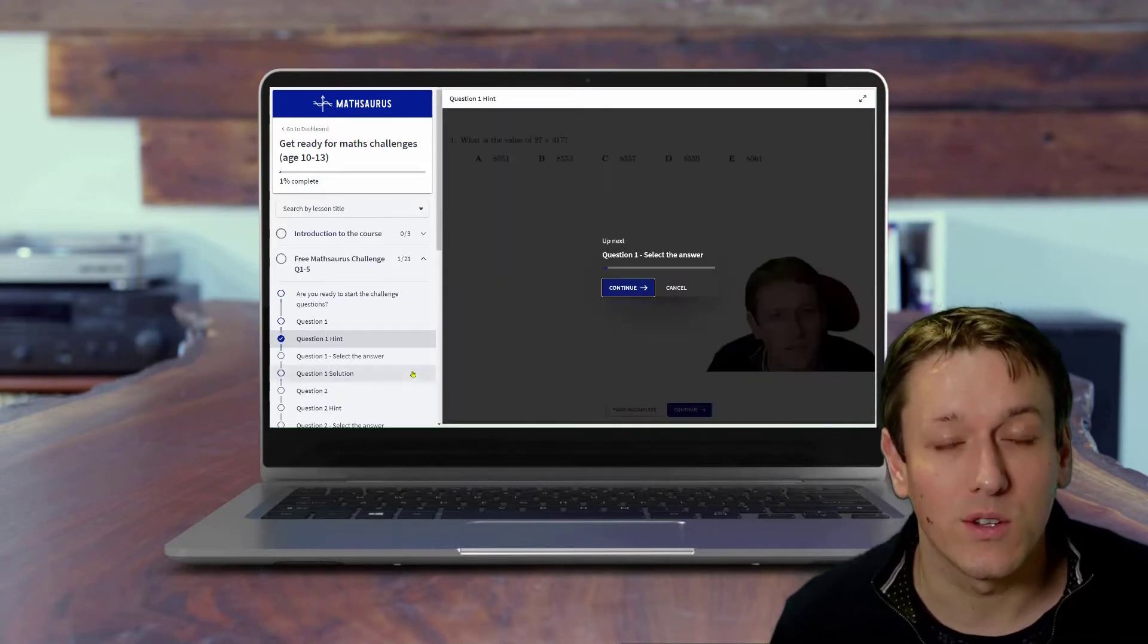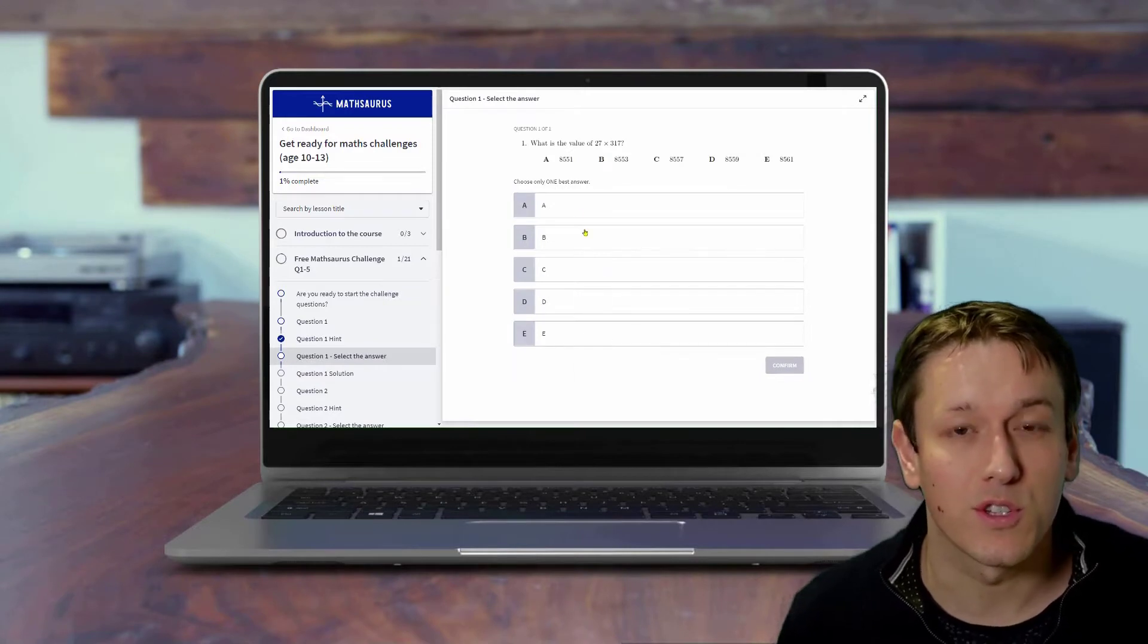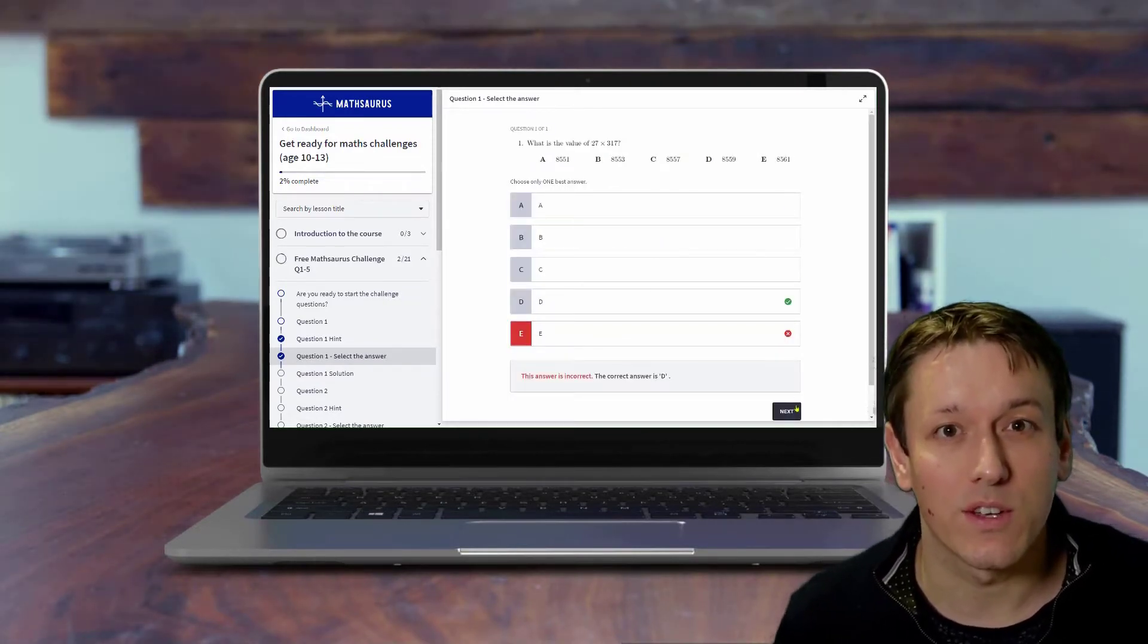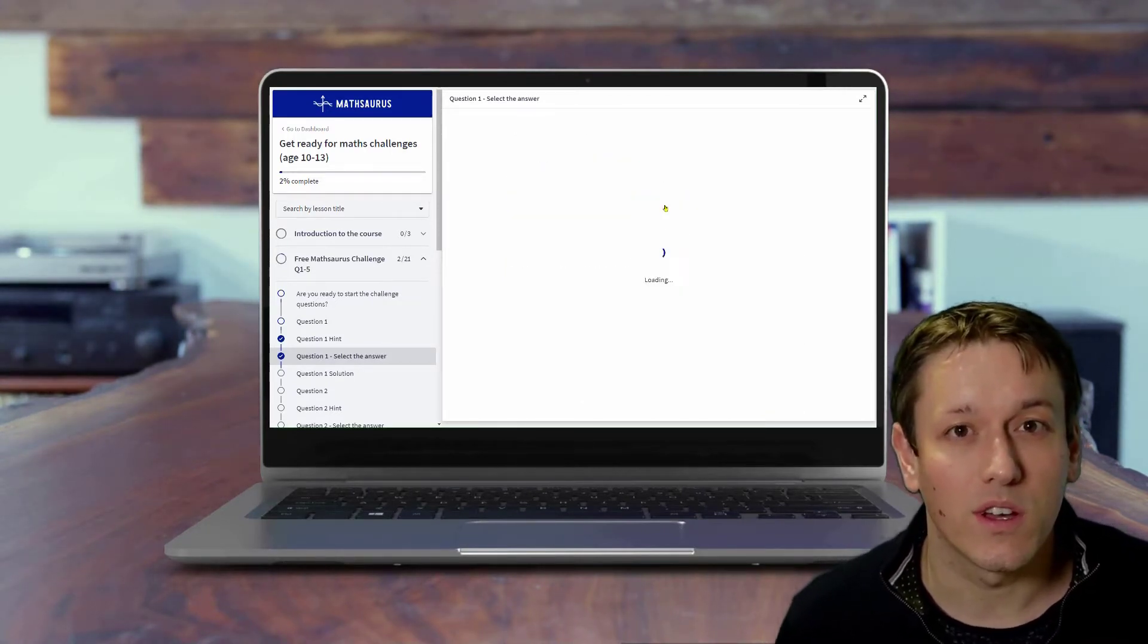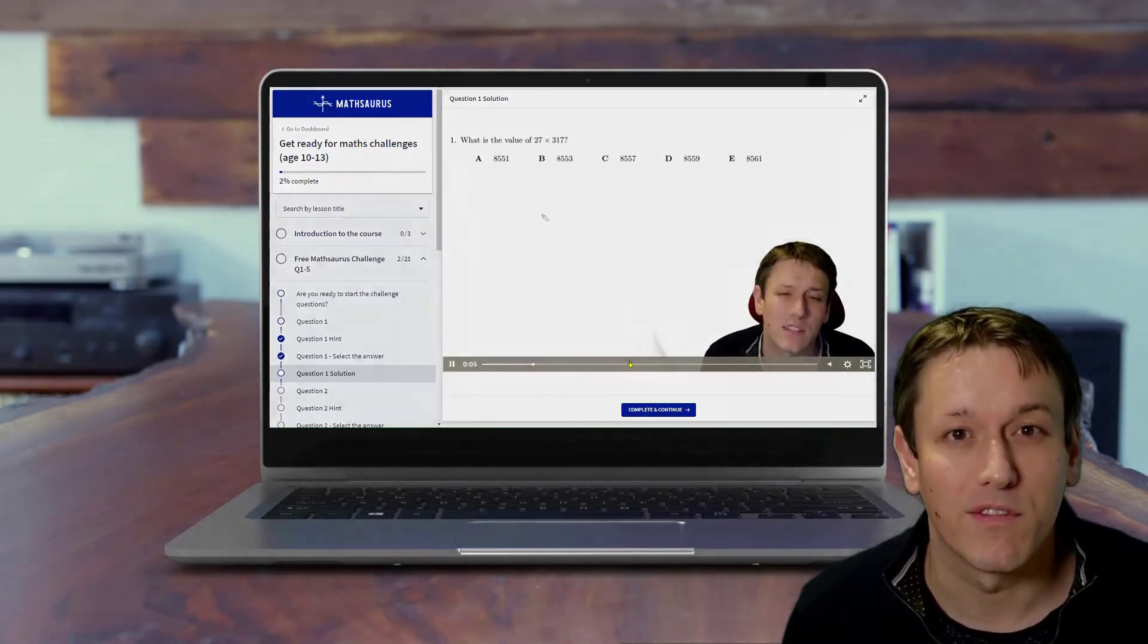Once you think you've got the answer, you can choose the answer from a selection of multiple choice options on the screen. It'll tell you whether you're right or wrong, then you can either have another go at the question if you got it wrong, or watch my video Solution if you are really stuck, or if you want to see if there's another way of solving the problem apart from the way that you did it.